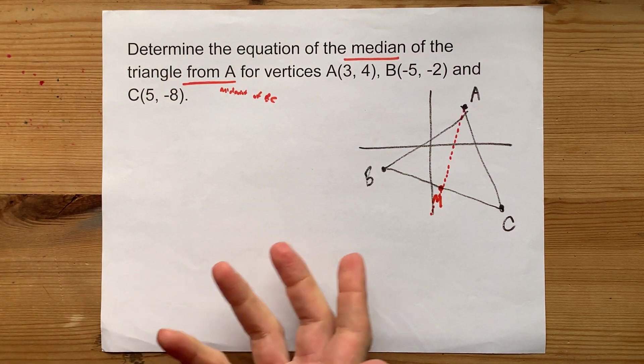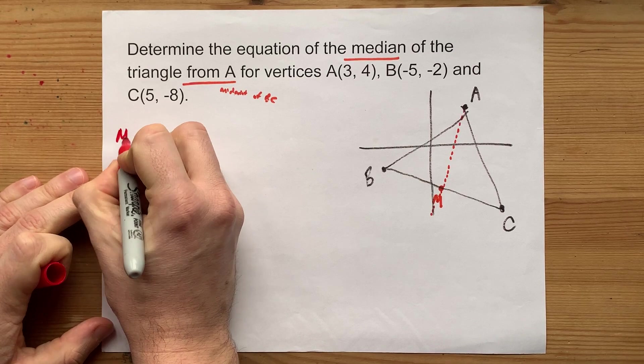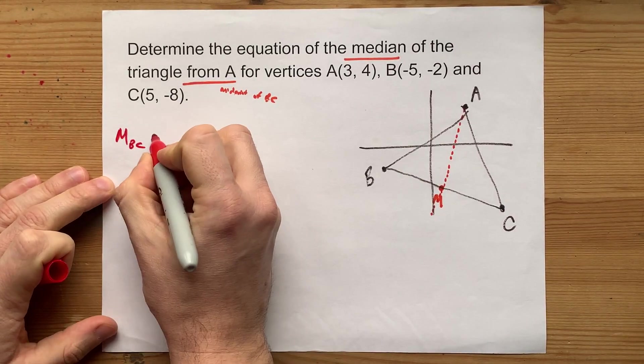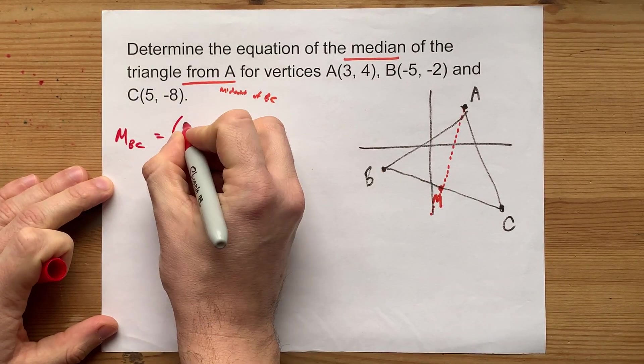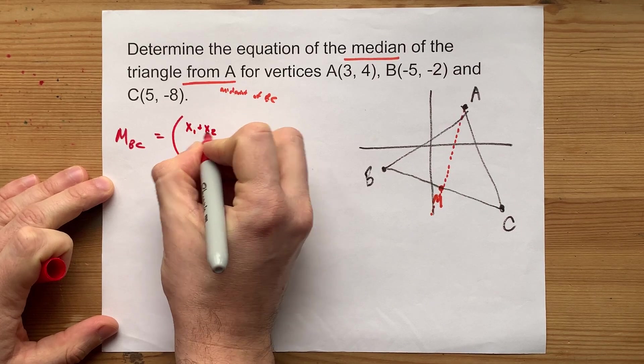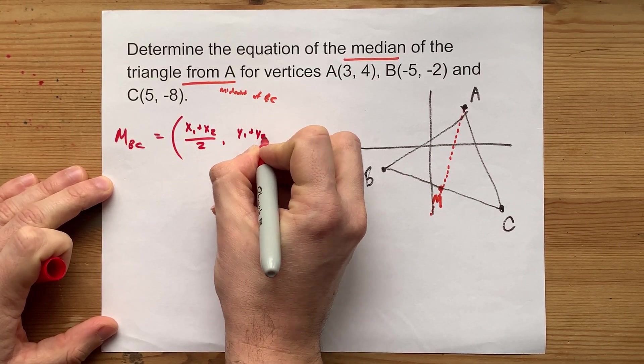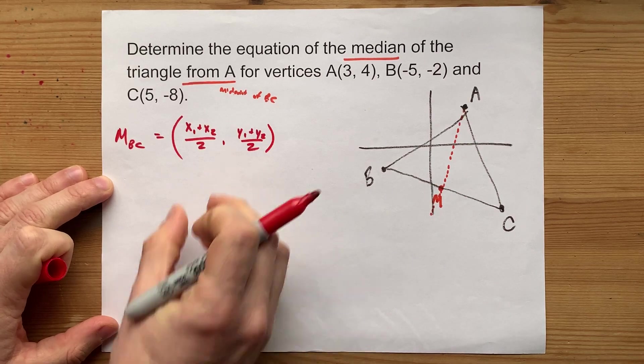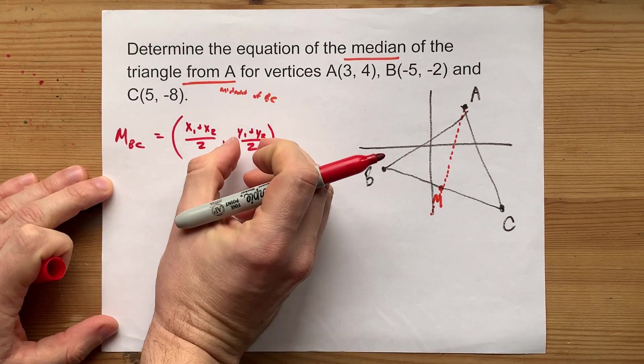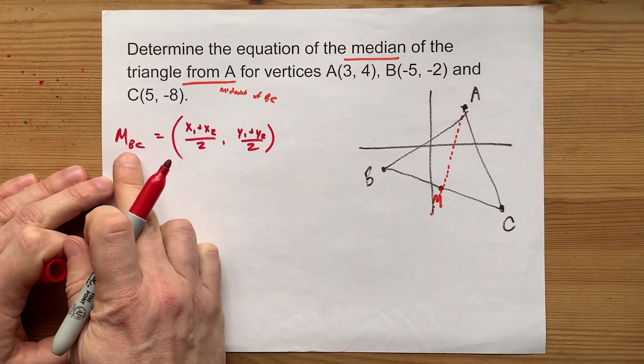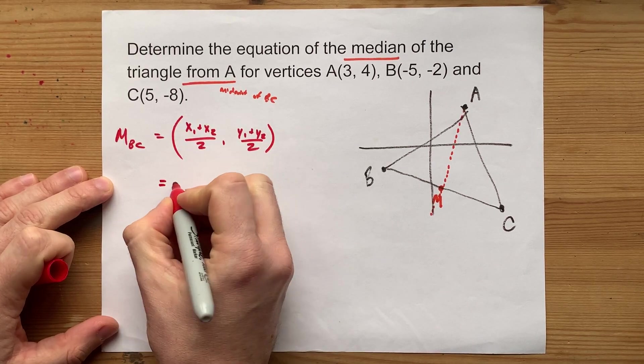How do you find the midpoint between B and C? Well, the formula that teachers use is x1 plus x2 over 2 comma y1 plus y2 over 2. You're really just averaging together the x's and averaging together the y's between points B and C.